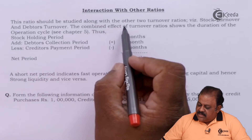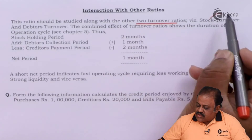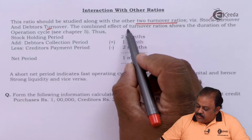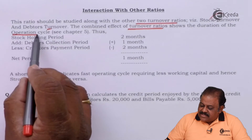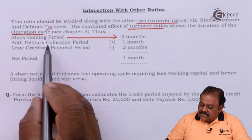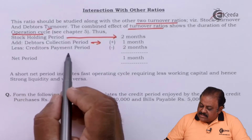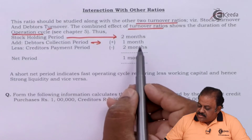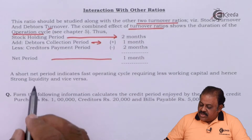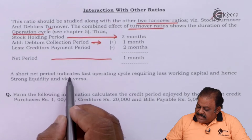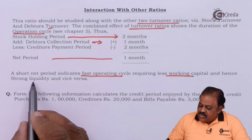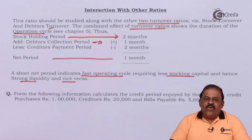This ratio should be studied along with two other turnover ratios: stock turnover ratio and debtors turnover ratio. The combined effect of these turnover ratios shows the duration of the operating cycle. For example: stock holding period 2 months, plus debtors collection period 1 month, less creditors payment period 2 months — net period is 1 month. A short net period indicates a fast operating cycle requiring less working capital and hence strong liquidity, and vice versa.